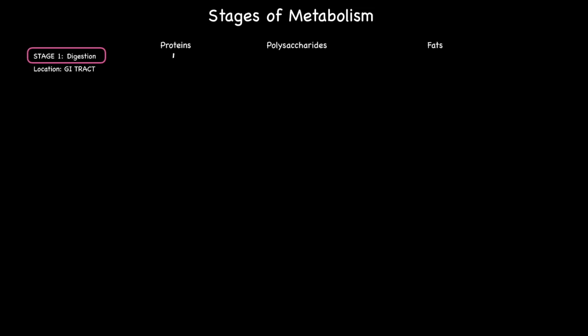During stage one, this involves the digestion of micronutrients, namely proteins, polysaccharides, and fats, within the gastrointestinal tract to give their constituent building blocks, which include amino acids, monosaccharides, and fatty acids, respectively.